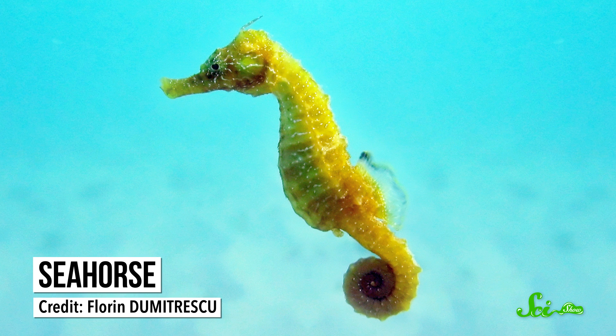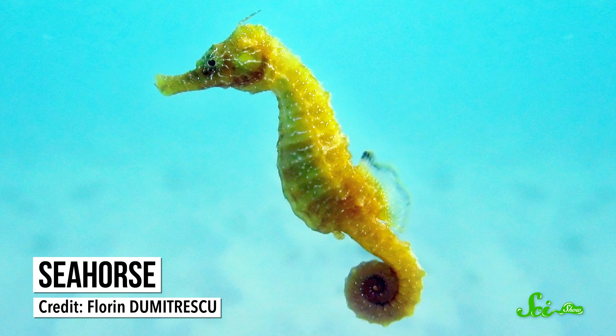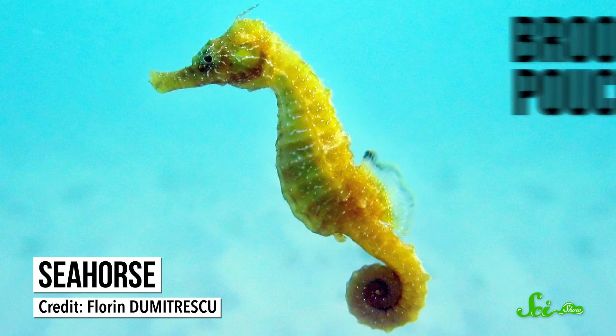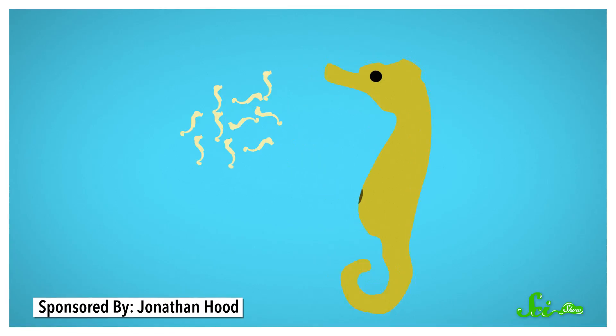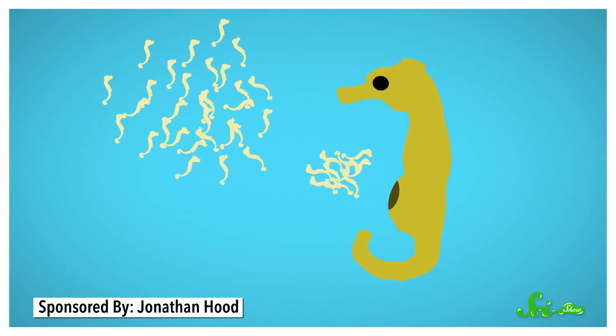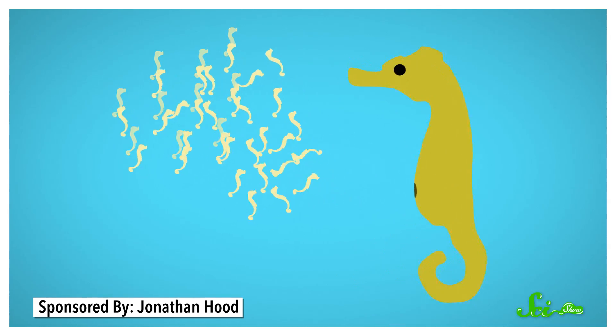As seahorse mating pairs get frisky, the female deposits her eggs into a special pouch on the male's stomach, called the brood pouch, as the male releases sperm to fertilize them. Then, the male carries the eggs for the 10-25 day gestation period, depending on the species, providing nutrients and oxygen, as well as helping the embryos balance their fluids and salts. Once the babies are fully developed, the male experiences abdominal contractions that help shoot the teeny tiny seahorses out of the pouch and into the ocean.